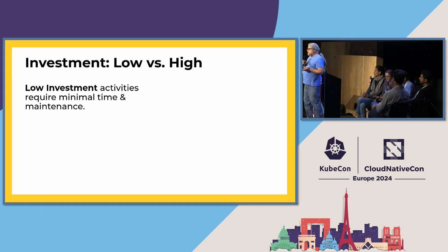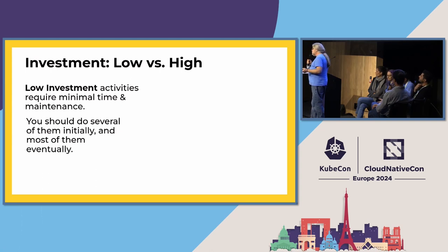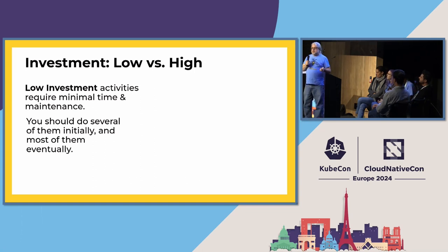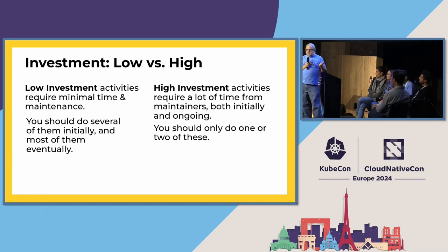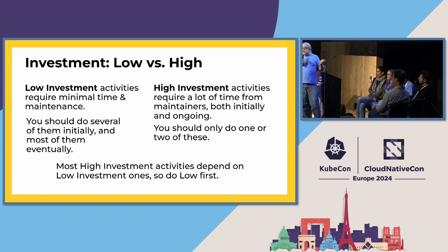Low investment contributor recruitment activities are ones where you put in a little effort to attract more contributors, and often the effort is one-time — like a basic contributor guide, which you do once and update about once a year. The idea is to do several of these because they are low investment. As your project matures, you'll do most of the possible low investment activities. High investment activities require a lot of maintainer time — time every single time you do them. As a result, you'll probably do only one or two of these per year, and that's okay and what you should plan on.